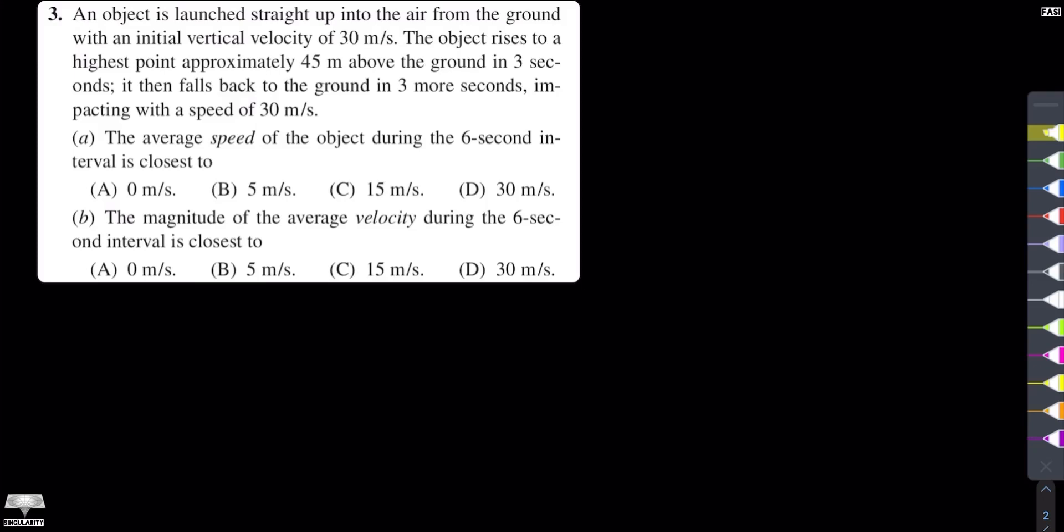Let's solve the third multiple choice question of chapter 2 of the book of Halliday, Resnick and Krane. The statement of the problem is: an object is launched straight up in the air from the ground with an initial vertical velocity of 30 meters per second. The object rises to a highest point approximately 45 meters above the ground in 3 seconds. It then falls back to the ground in 3 more seconds impacting with a speed of 30 meters per second.